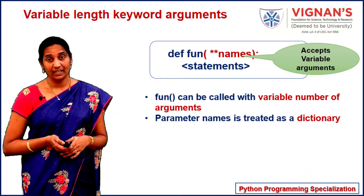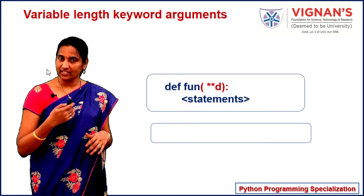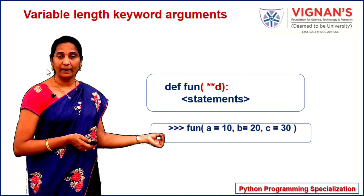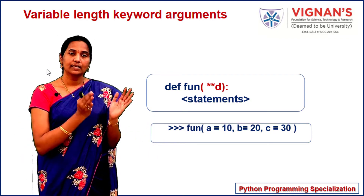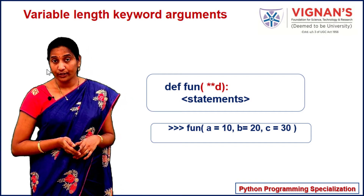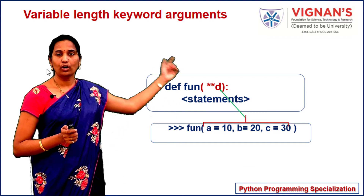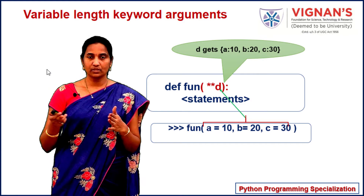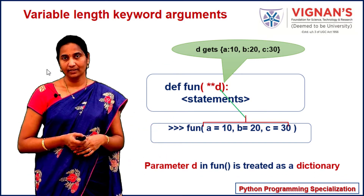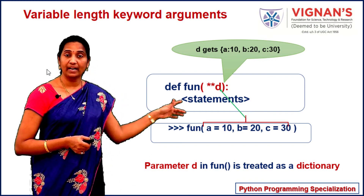That's how you can use variable length keyword arguments. Consider this function definition where d is a variable length keyword parameter. You pass all multiple arguments as key-value pairs. All these elements along with their keywords and values are packed as a dictionary and copied to d. For example, d gets a dictionary with values a: 10, b: 20, c: 30. Remember, throughout the function body, the parameter d is treated as a dictionary — whereas with variable length positional arguments, the parameter is treated as a tuple.